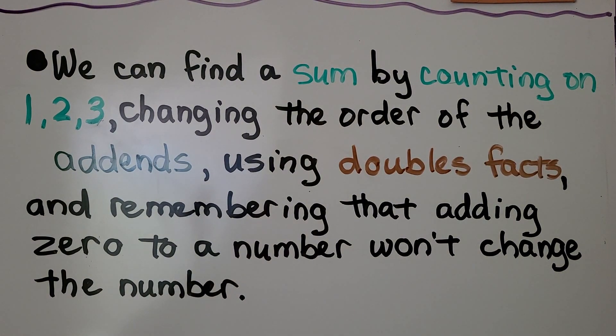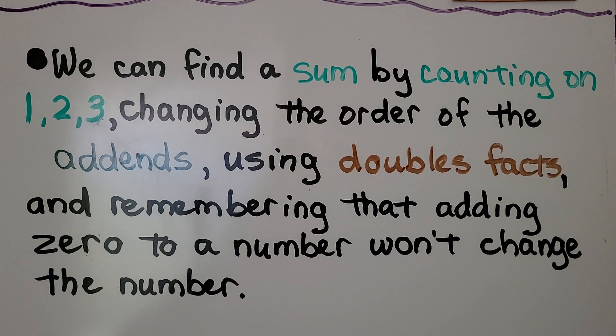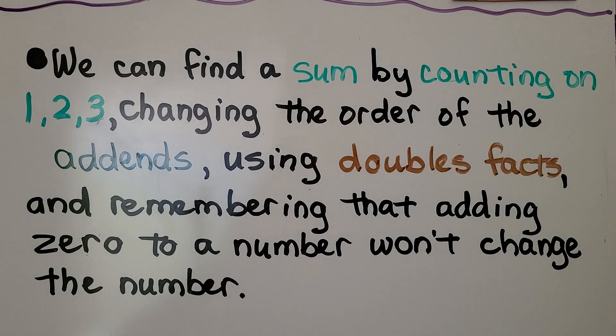We can find a sum by counting on 1, 2, 3, changing the order of the addends, using doubles facts, and remembering that adding 0 to a number won't change the number.